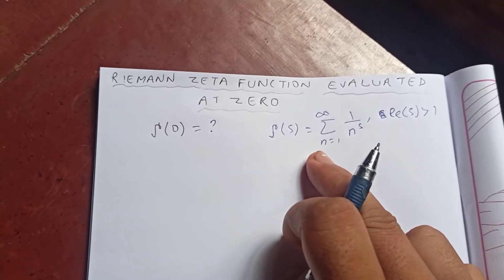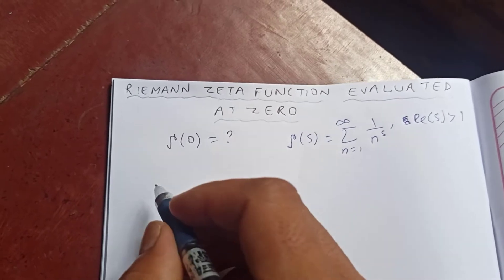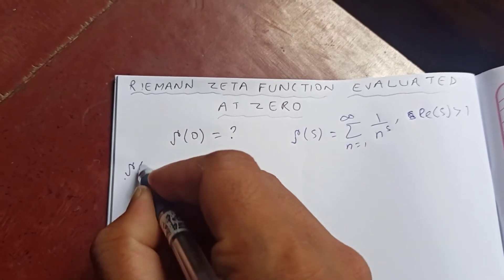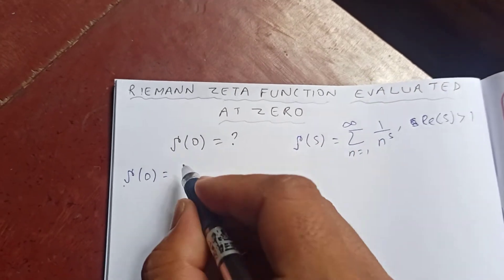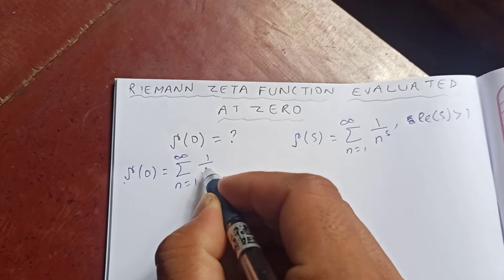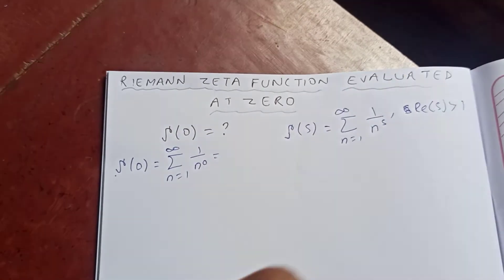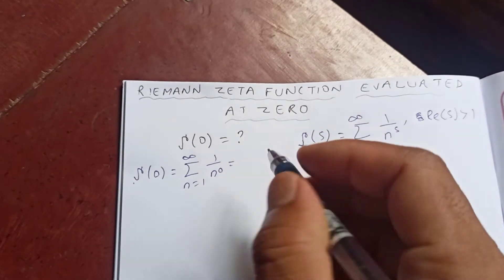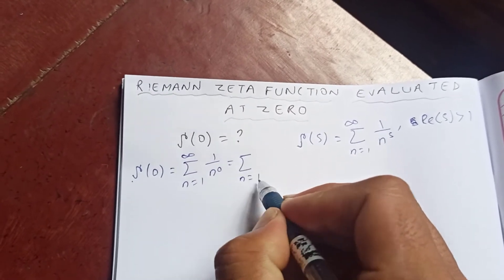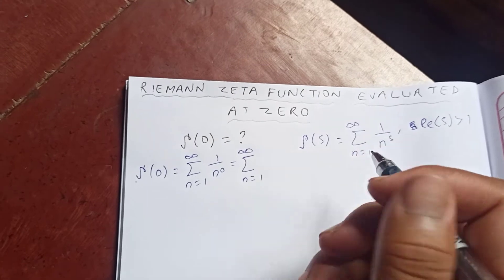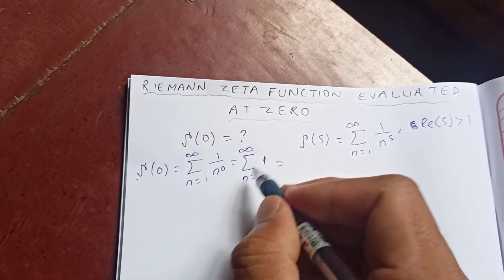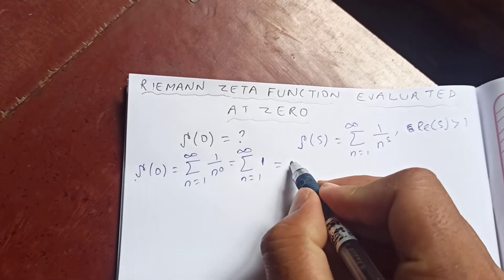So let's see at zeta of zero. Zeta of zero is the sum from n equal to one to infinity of one over n to the zero. Any number to the power zero is just one, so this is nothing but the sum from n equal to one to infinity of one.